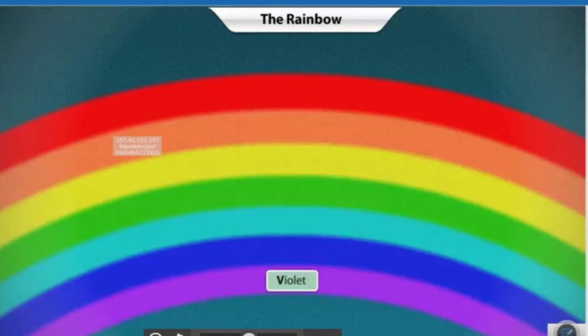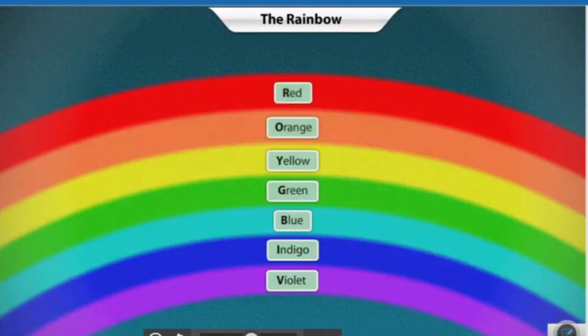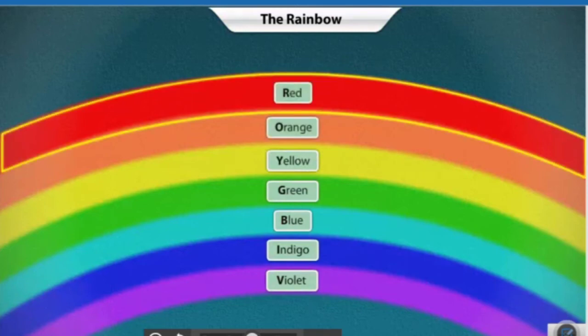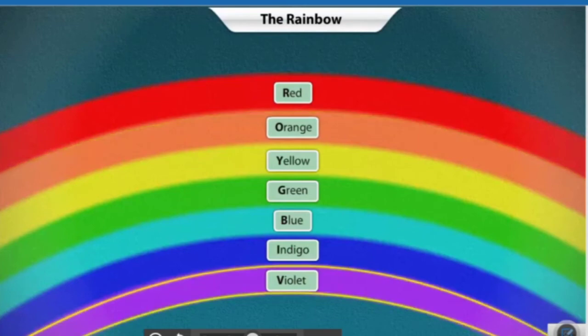The acronym VIBGYOR is used to remember the sequence of the colors in a white beam of light. From the spectrum, you can see that red color bends the least and violet color bends the most.